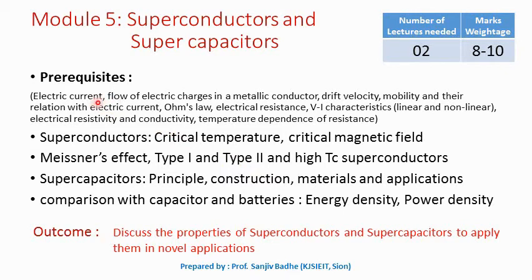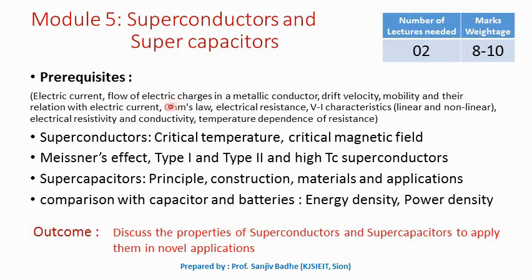What is electric current, flow of electric charges in metallic conductor, the meaning of drift velocity, mobility, relation of velocity and mobility with the electric current, what is Ohm's law, electrical resistance, linear and non-linear VI characteristics, what is the meaning of resistivity and conductivity, and how the resistance depends on temperature — all these things we will discuss as prerequisites.